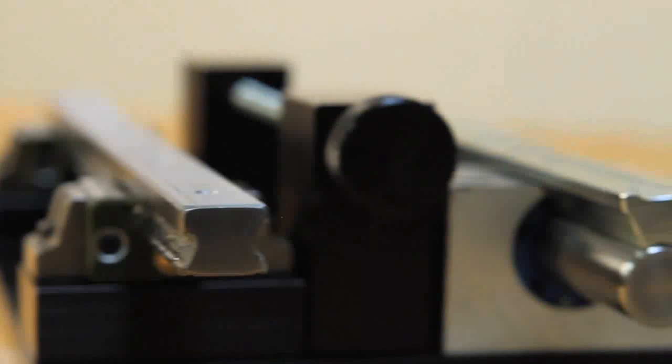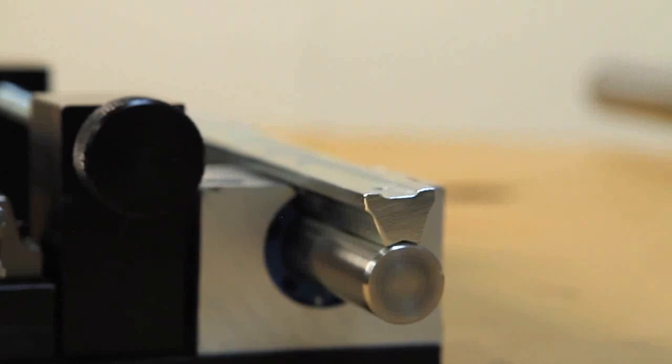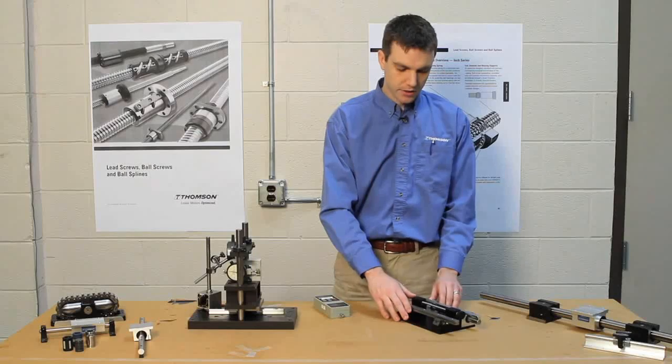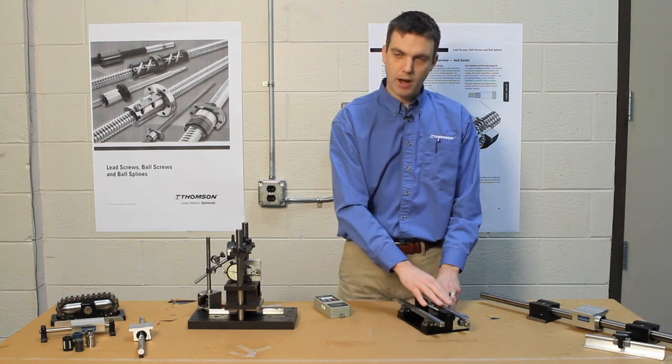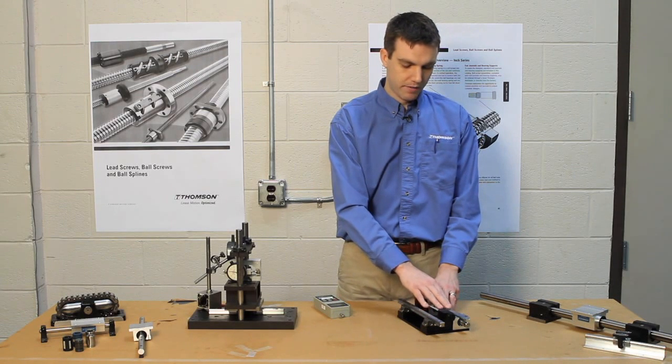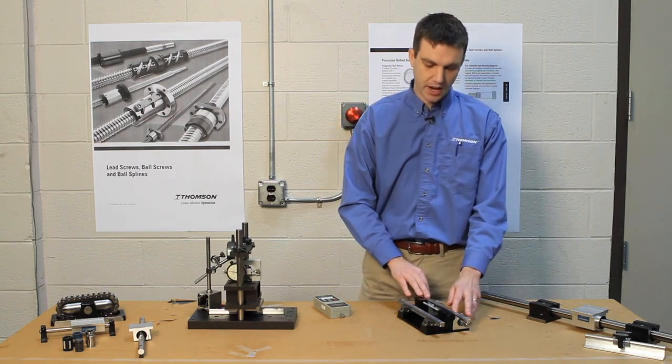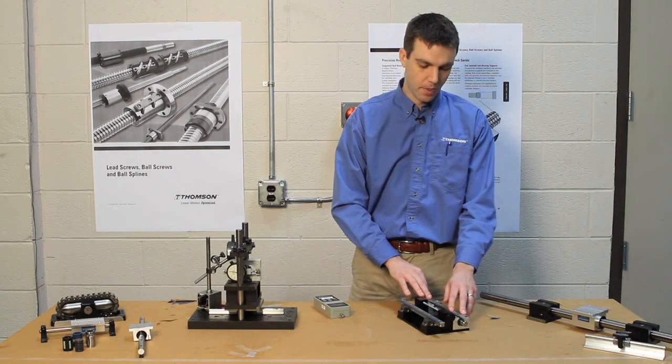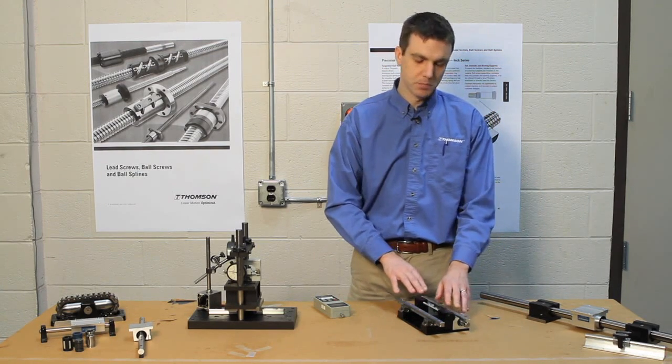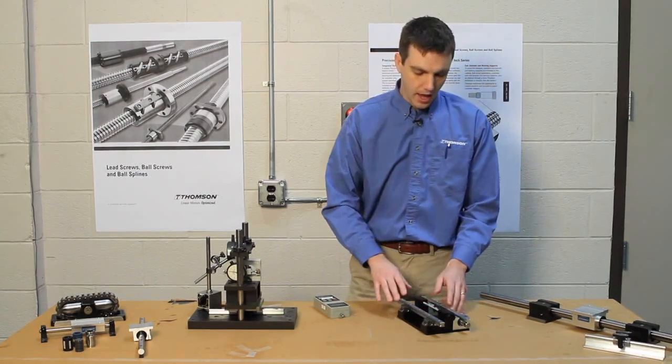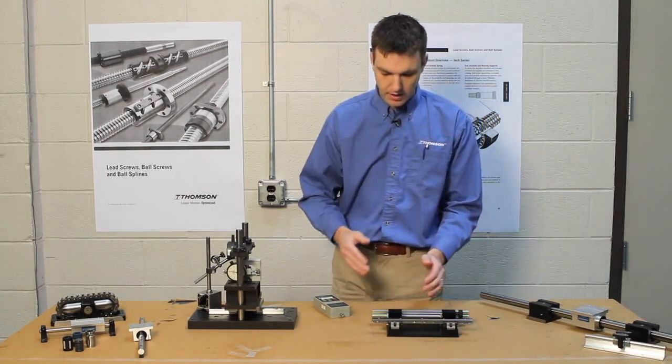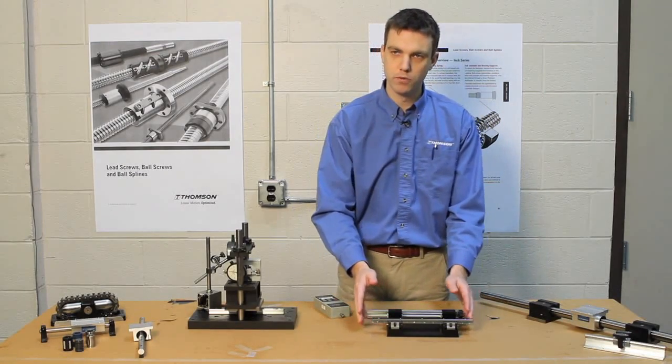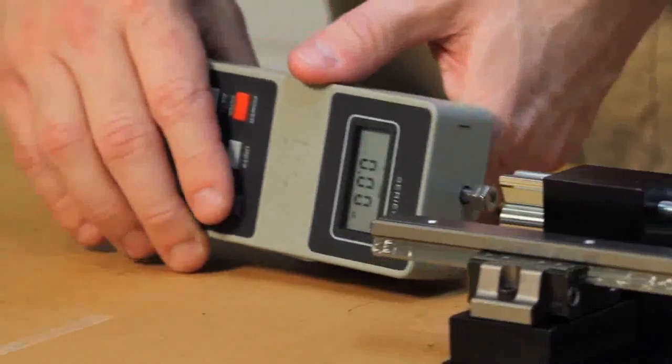So this is what we call the misalignment rig. One big problem we run into with users is they'll spec in the square rail type instead of a round rail when really the round rail would have been more advantageous because round rail is inherently, for the most part, self-aligning. And so it's much easier to install. And what we're going to show here is some of the differences you'll find in the push force required to move your bearing. First we'll start with the round rail.